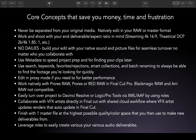You can use metadata to speed project prep and for finding your clips later, which reduces the laborious assistant edit process. Using timecode to do your syncing is a huge time saver. You can also use search, keywords, favorites, rejections, smart collections, and battery naming to always find footage quickly. Edit in proxy mode if your machine can't handle your original media and flip back and forth between proxy and original in Final Cut. The raw formats supported natively in Final Cut are ProRes RAW and RED RAW.